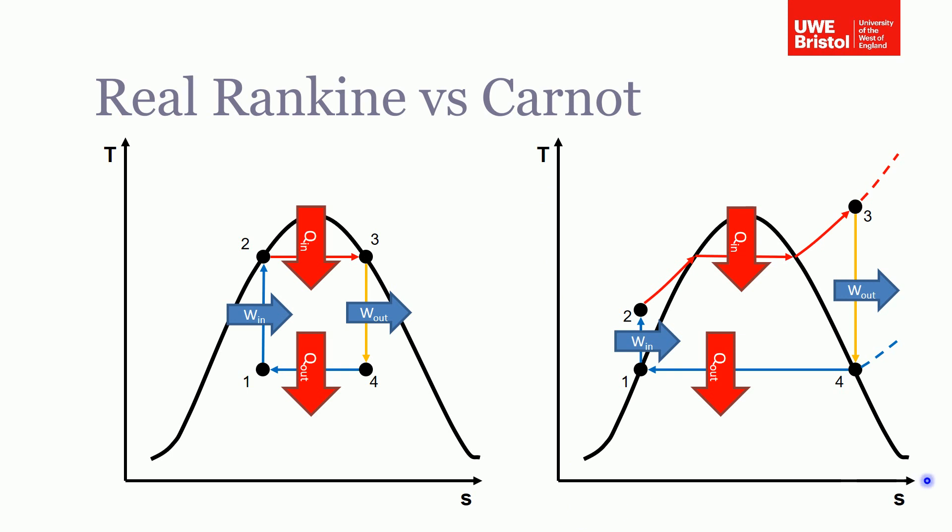Here you can see the TS plot on the right for the Rankine cycle which we talked about in the last section, and on the left here's the TS plot for a Carnot cycle. For the Carnot cycle, it's made up of straight lines - isentropic work in, isothermal heating and heat rejection, and then isentropic work out as well. You can see that the Rankine cycle is a very different shape to the Carnot cycle.